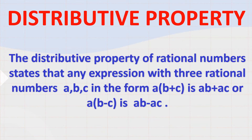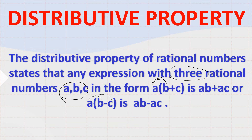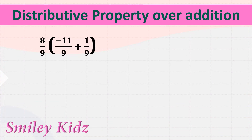What is distributive property? The distributive property of rational numbers states that any expression with three rational numbers a, b, c in the form a multiplied by (b plus c) is equal to a multiplied by b plus a multiplied by c, or a multiplied by (b minus c) is equal to a multiplied by b minus a multiplied by c.